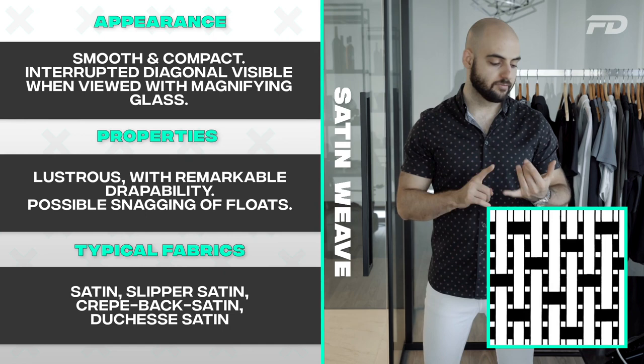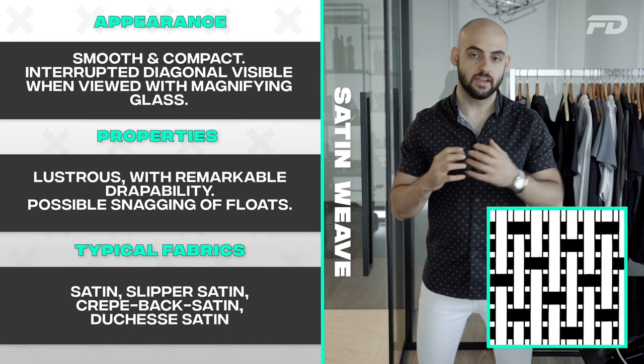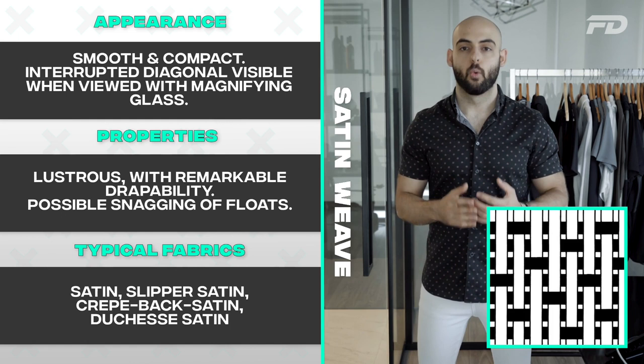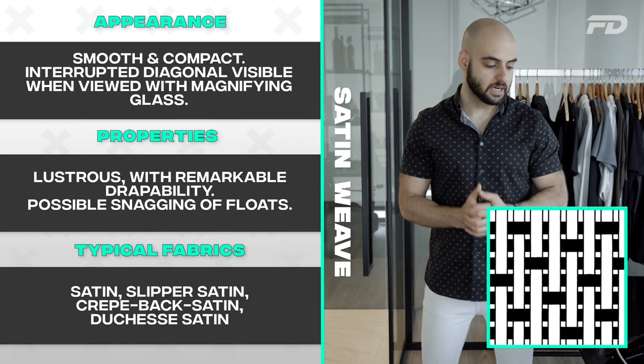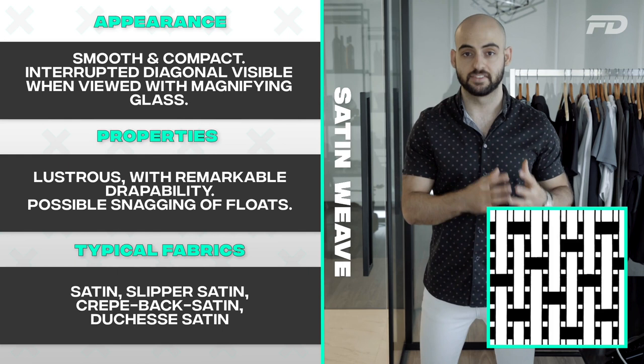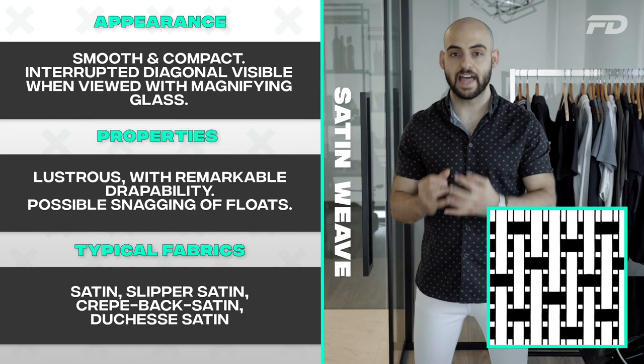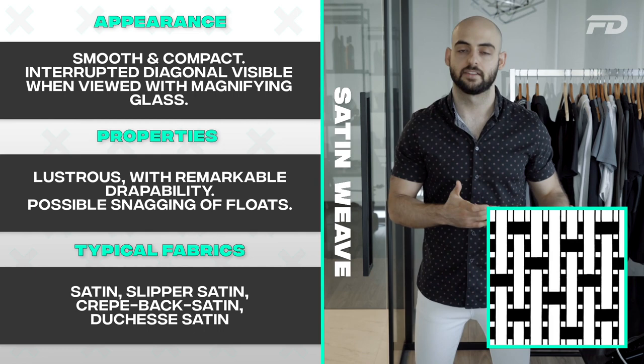Next is a weave structure that needs no introduction — satin. Satin is characterized by four-shaft or higher warp floats in an uninterrupted diagonal. The appearance is smooth and compact, and the uninterrupted warp diagonals can actually be viewed under a magnifying glass. When it comes to physical properties, satin is extremely lustrous with remarkable drapeability — that's why it's used on feminine nightgowns. It complements the physique well, though it is quite delicate: the uninterrupted diagonals can be snagged, and when snagging occurs, the entire fabric can unravel.